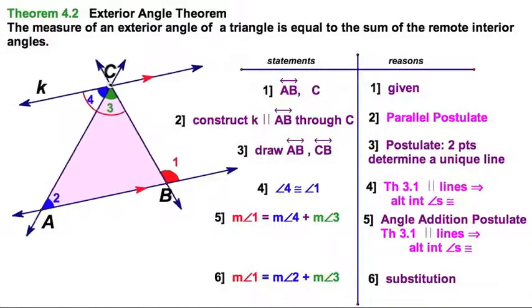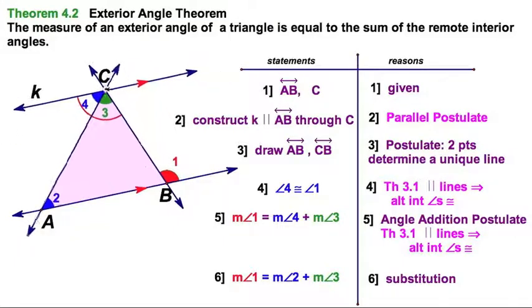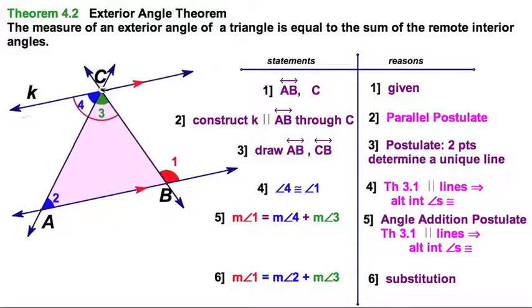And again, if I move the figure around, you see it remains consistent. So the red angle is equal to the sum of the blue and the green. So let's see it here.